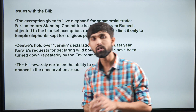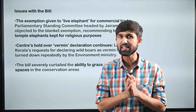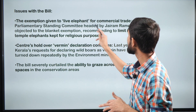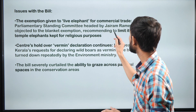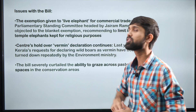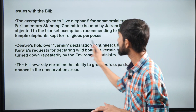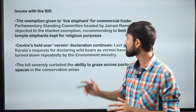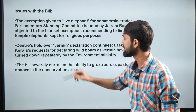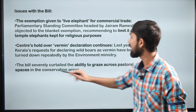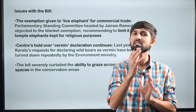The article highlights certain issues with this bill. First, the exemption given to live elephants for commercial trade is problematic — the Parliamentary Standing Committee headed by Jairam Ramesh objected to the blanket exemption, recommending it be limited only to temple elephants kept for religious purposes. Second, the Centre's hold over vermin declaration continues, and Kerala's request for declaring wild boars as vermin has been turned down repeatedly by the Environment Ministry, causing friction between states and the Centre.